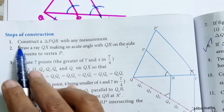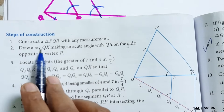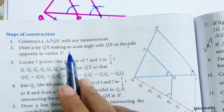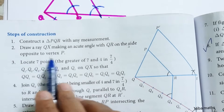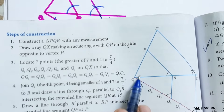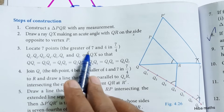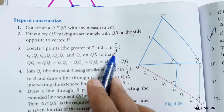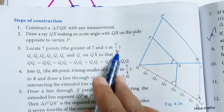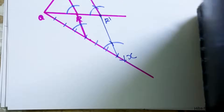There are steps of construction. First, construct triangle PQR with any measurement. Draw ray QX making an acute angle with QR, on the side opposite to the vertex P. Locate 7 points — taking the greater of 7 and 4 in the ratio 7 by 4 — as Q1, Q2, Q3, Q4, Q5, Q6, Q7.